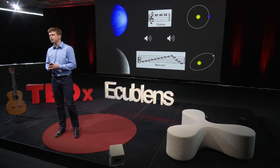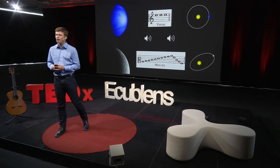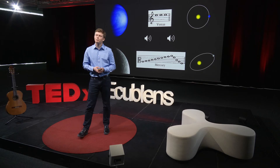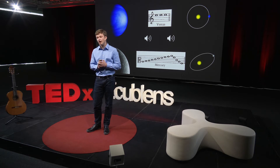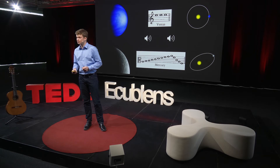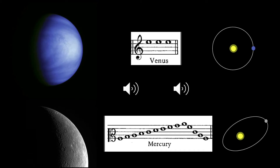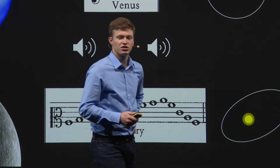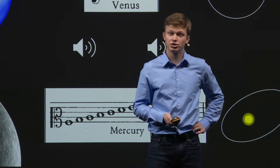Let us now listen to two musical examples. First, the scale of Mercury. Mercury's scale consists of many notes placed in the high register, because Mercury's orbit is very eccentric. On the other hand, Venus's scale goes like this. It consists of only one note repeated three times, because Venus's orbit is very circular.